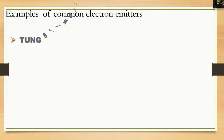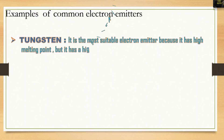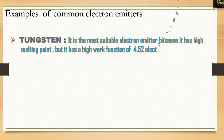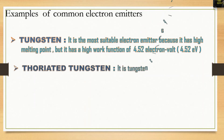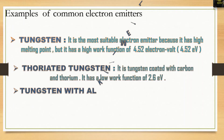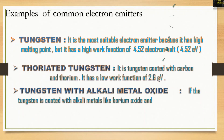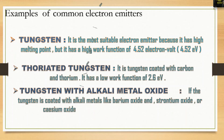Now let's take a look at some common electron emitters. Tungsten is the most suitable electron emitter because it has a high melting point, but it also has a high work function of 4.52 eV. Thoriated tungsten is tungsten coated with carbon and thorium; it has a lower work function of 2.6 eV. Tungsten with alkali metal oxides — if tungsten is coated with alkali metal oxides like barium oxide, strontium oxide, or cesium oxide — then it has a work function of just 1 eV.